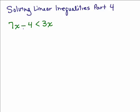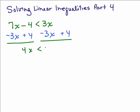How about subtracting 3x from both sides so that we have the variables on the left side, and let's add 4 to both sides so that the constants are on the right. So 7x minus 3x is 4x is less than 4, and just divide both sides by 4 to get our solution: x is less than 1.